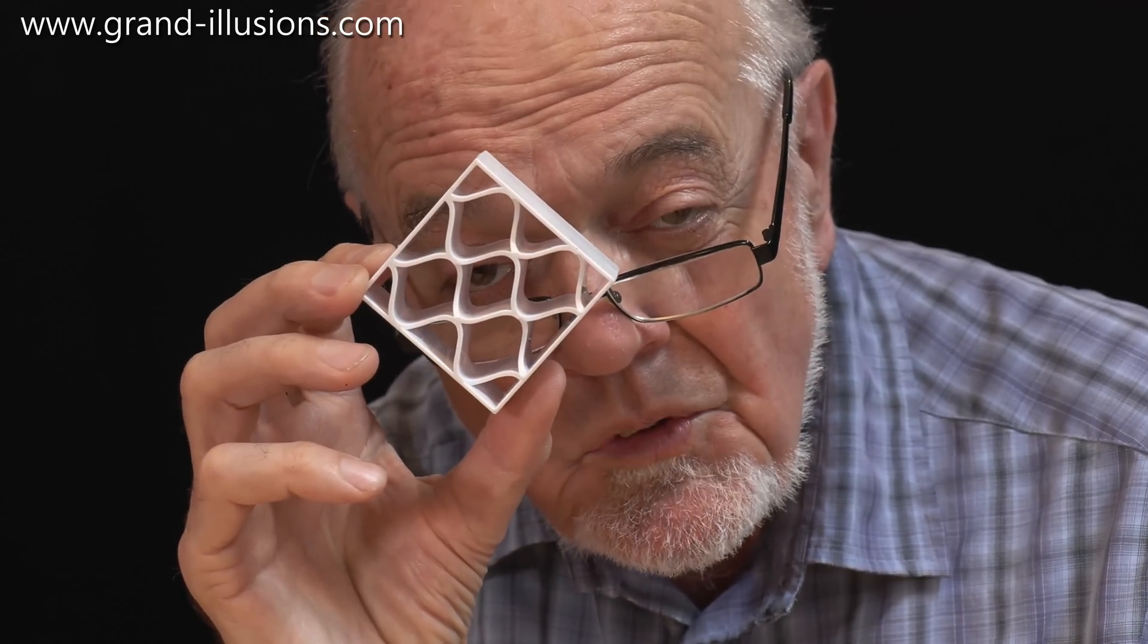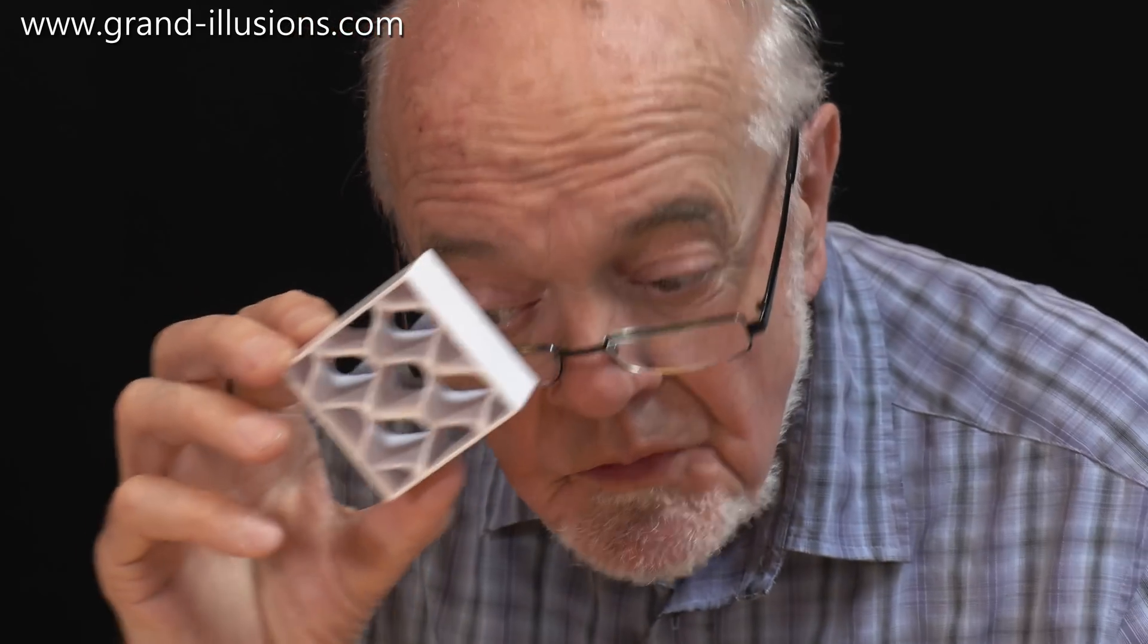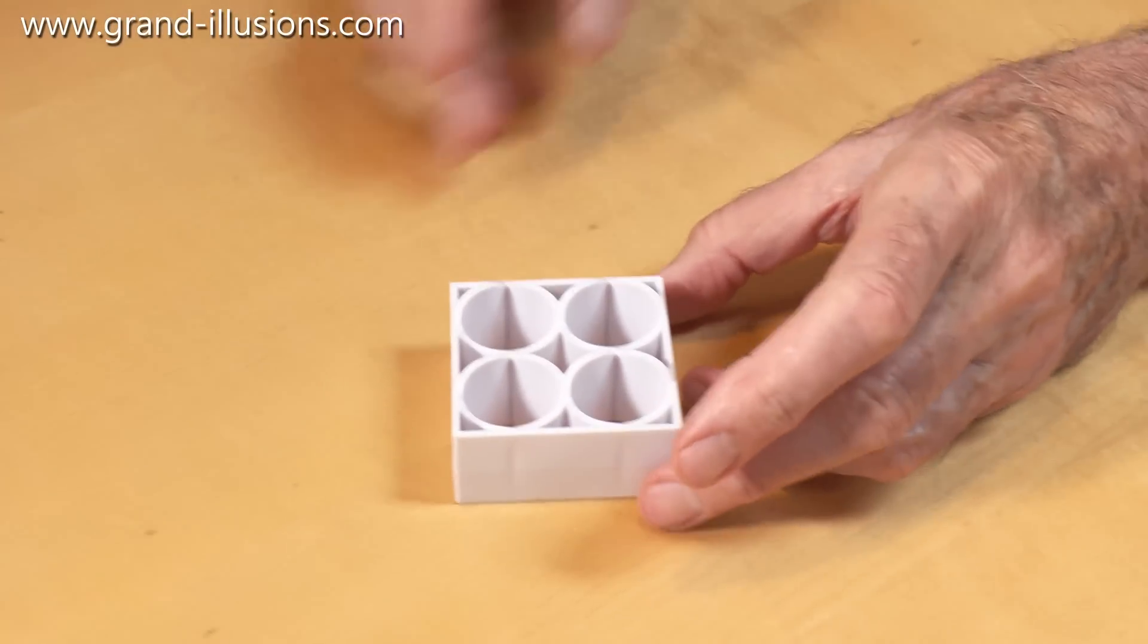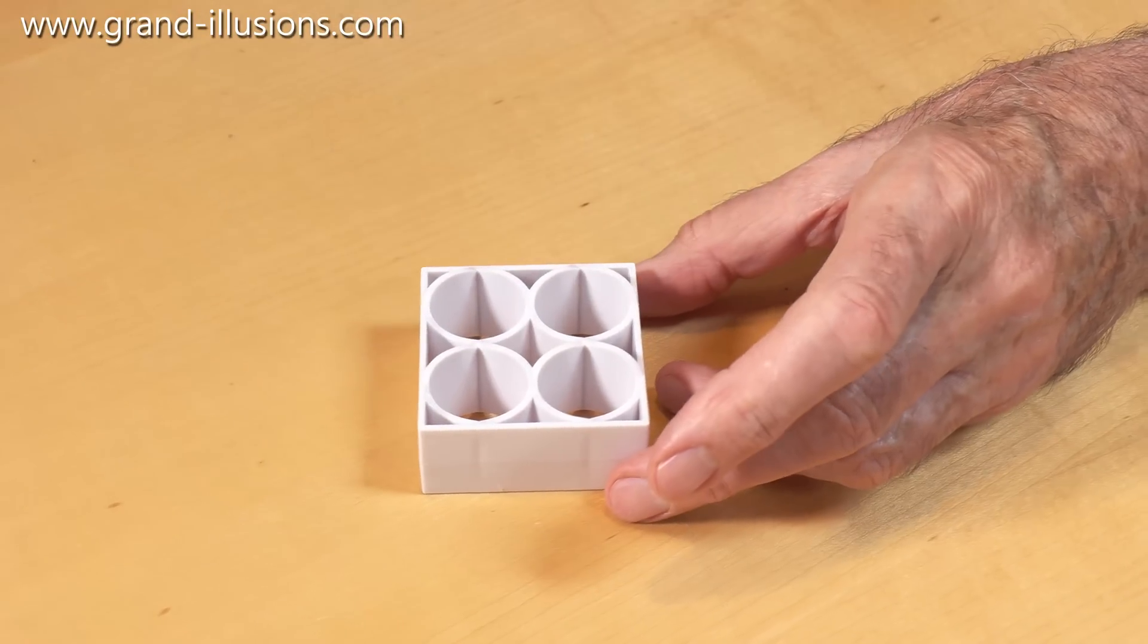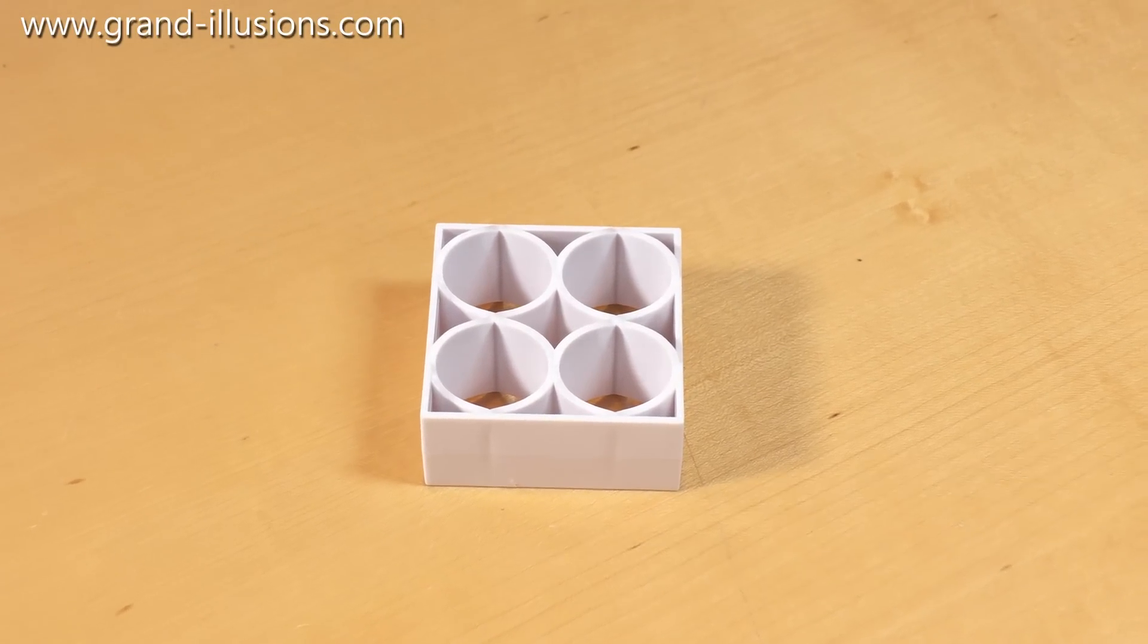It does something quite extraordinary when you put it on the table and look down at 45 degrees, which is what I'll now do. We put it on the table, and we've got a little box with a straight edge, and four quite large circles occupying the middle of the box.